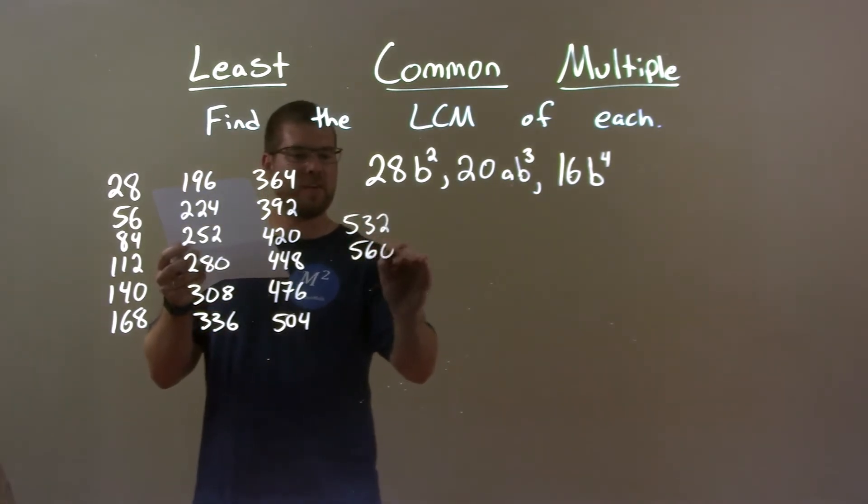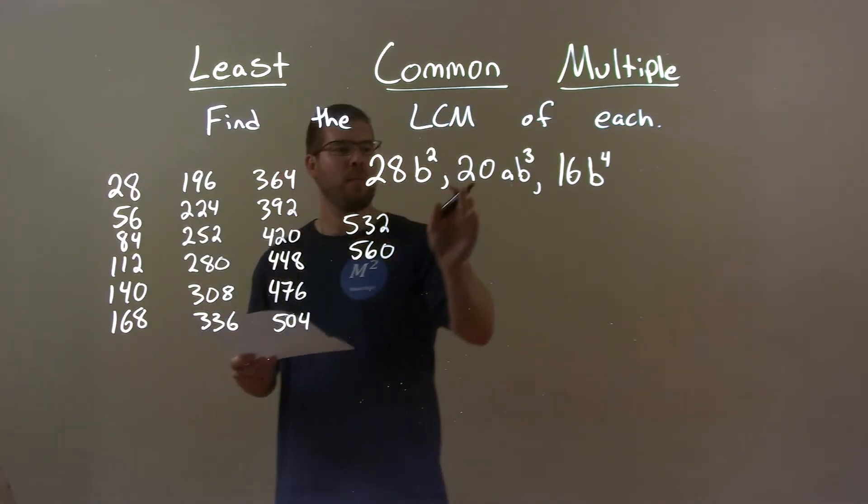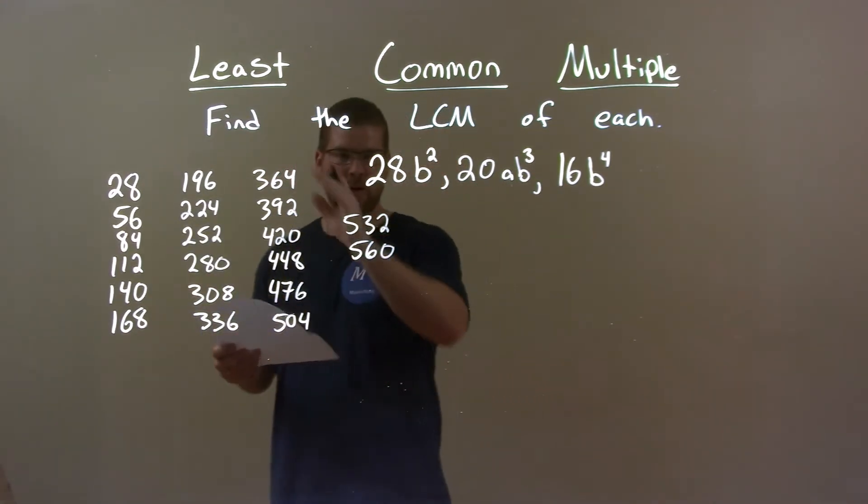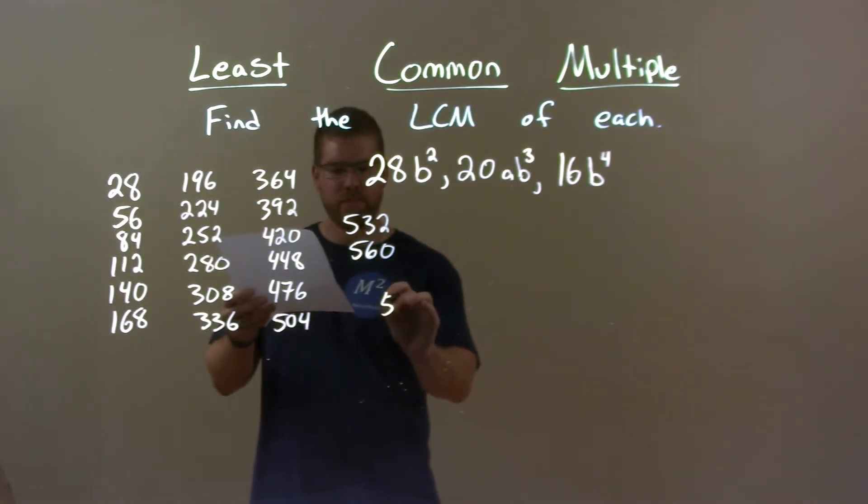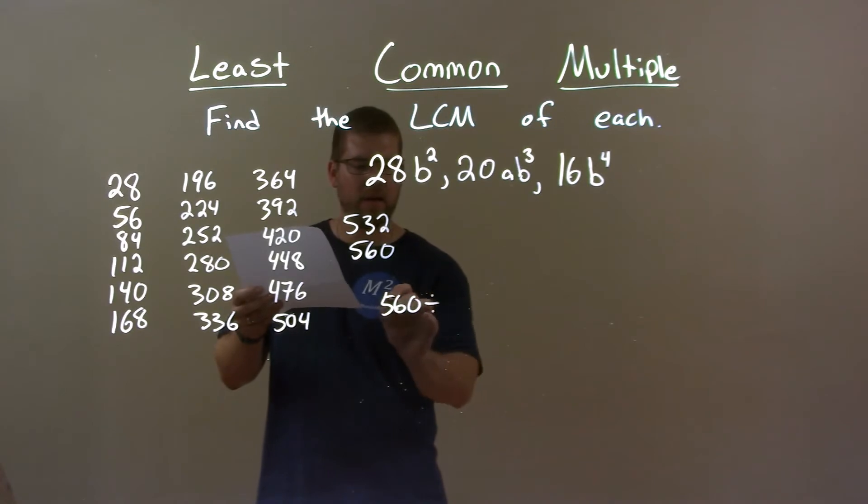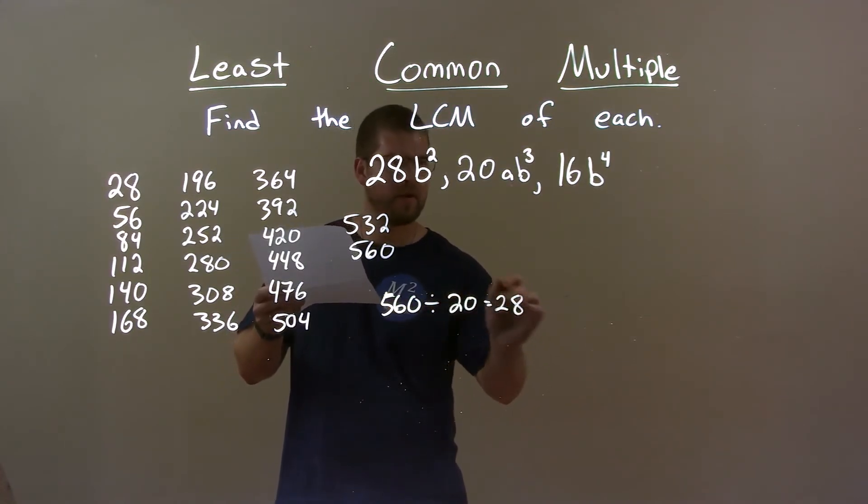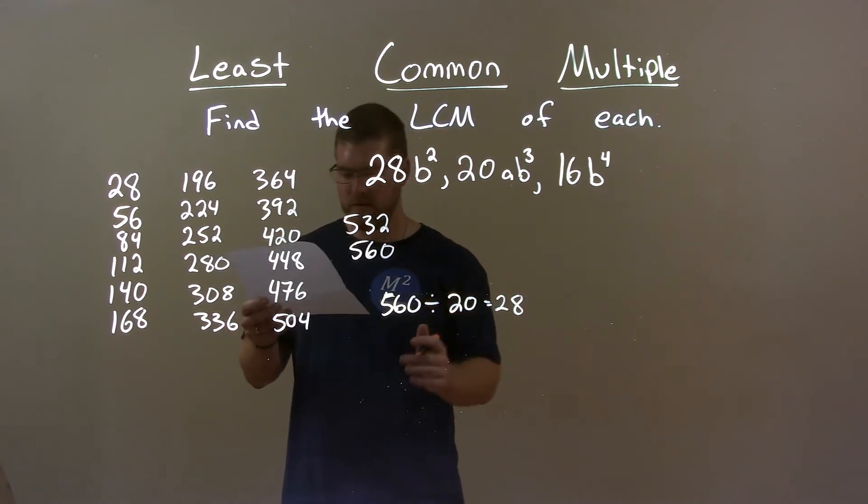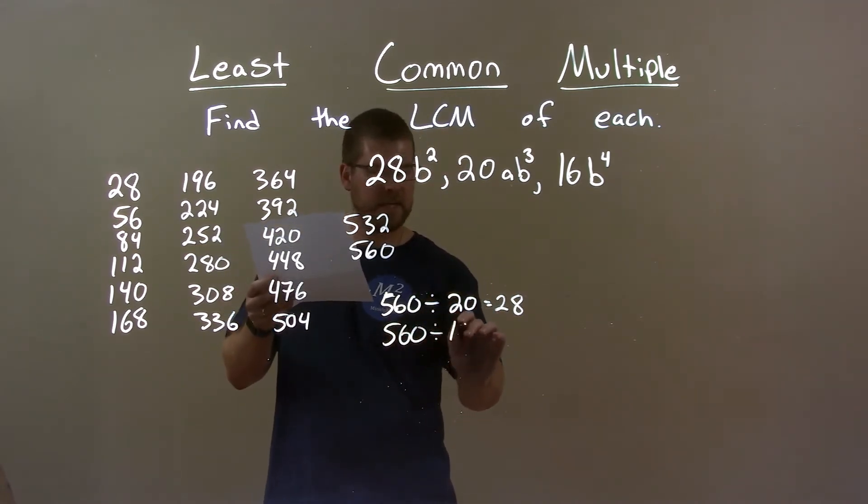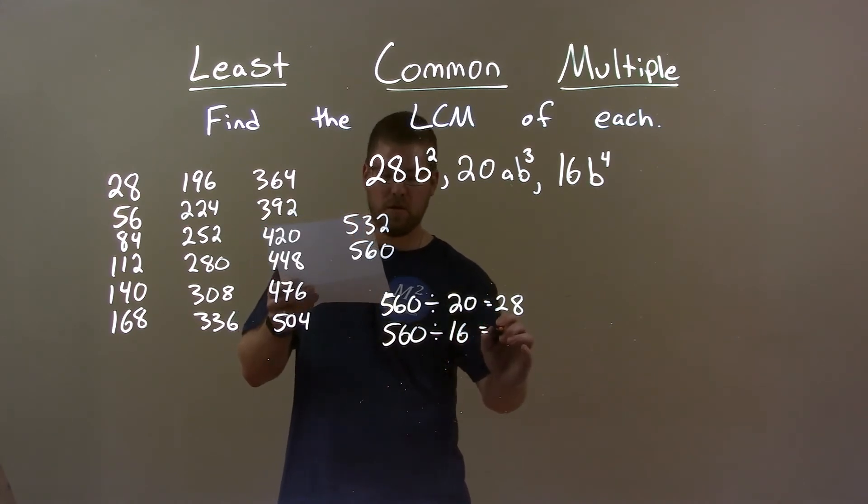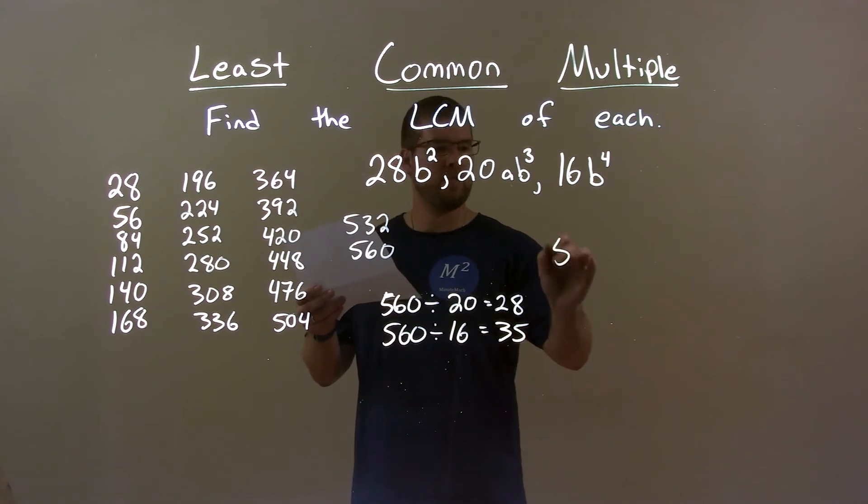But 560, believe it or not, is the first number that is divisible by 20 and 16 of our list of the multiples of 28. 560 divided by 20 is 28. 28 times 20 is 560. And 560 divided by 16 is 35. So we have 560.